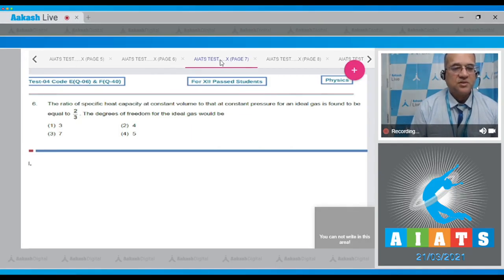Question number 6: The ratio of the specific heat at constant volume to that at constant pressure for an ideal gas is found to be 2/3. Find the degree of freedom for this ideal gas.